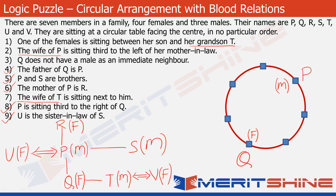Statement three says Q does not have a male as an immediate neighbour. The immediate neighbours of Q are the two adjacent positions, so both of those positions would also be occupied by females. Statement one says one of the females is sitting between her son and her grandson, meaning there is at least one female who has two males as her neighbours. It cannot be any of the three females already placed, so she must occupy some other position.